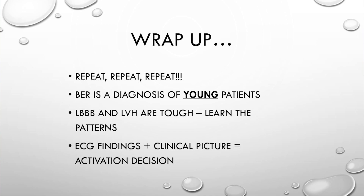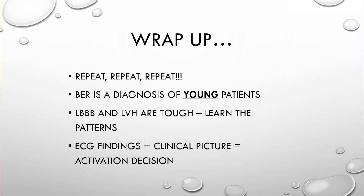Take-home points: get as many EKGs as are clinically necessary — the best picture is multiple pictures. An EKG is just one snapshot in time; remember, this is a dynamic process. Benign early repol requires EKG findings in the proper clinical picture — typically younger patients, not typical anginal chest pain. Left bundle branch block and LVH are tough, but learn the patterns of a normal left bundle and a normal LVH so you can pick up the abnormal ones. Don't focus on scoring systems to call a STEMI within one — understand what a normal one looks like. And always remember: it's the clinical picture plus the EKG. Nothing stands alone.